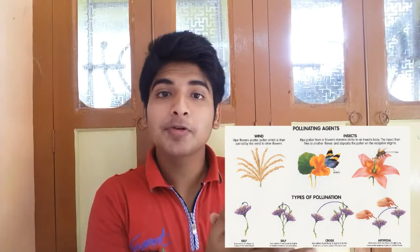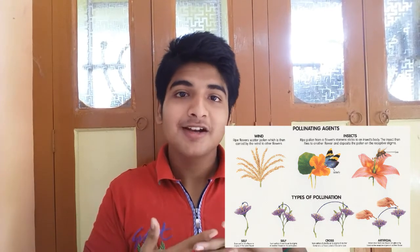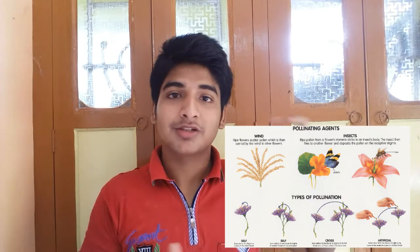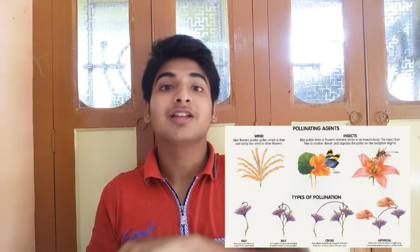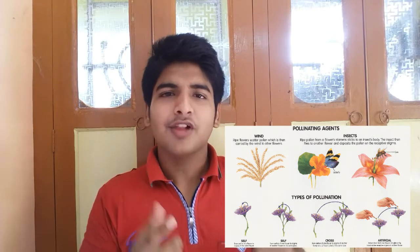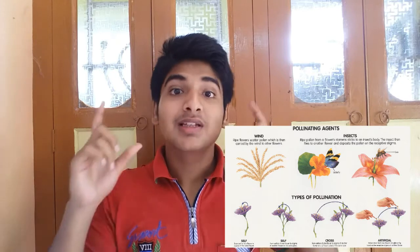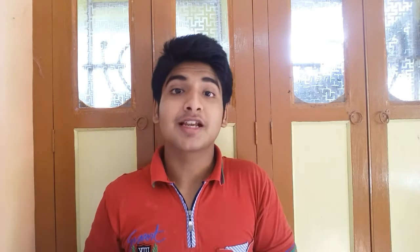Pollination is nothing but a reproduction process of plants. What happens here is a spore comes into a flower and it goes on and drops into a flower's ovary. The flower may be the same or maybe different, but the type of flower should be the same. This process is actually called pollination.